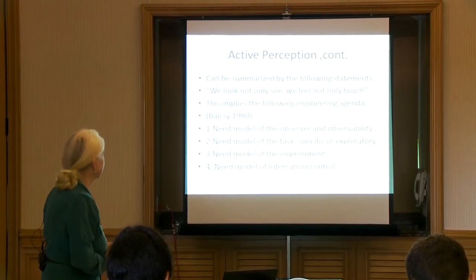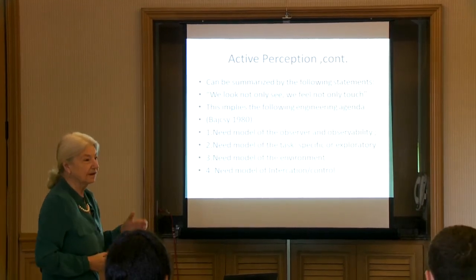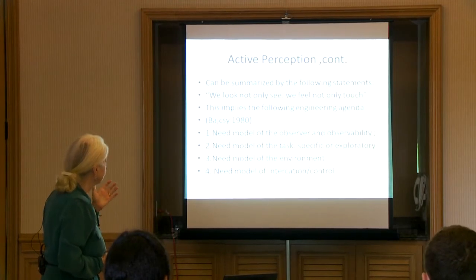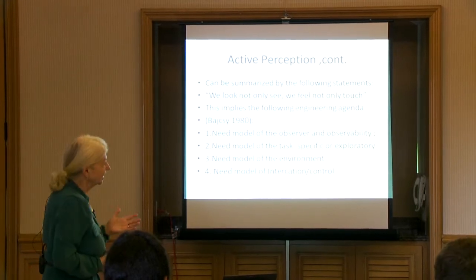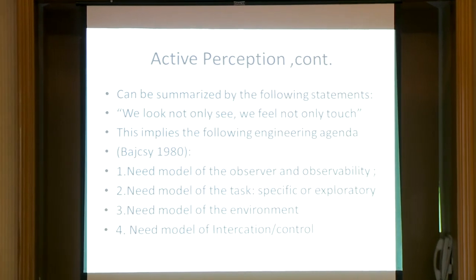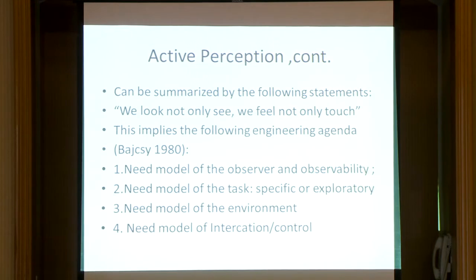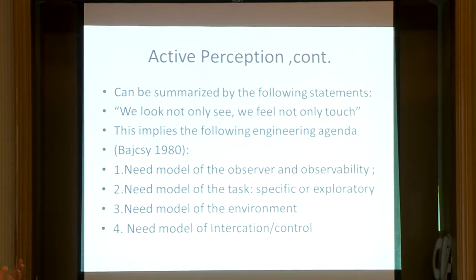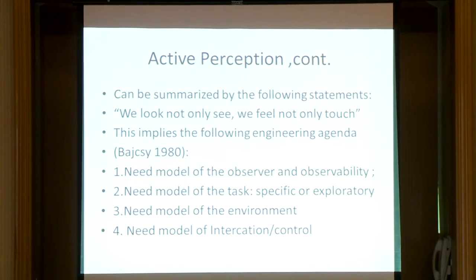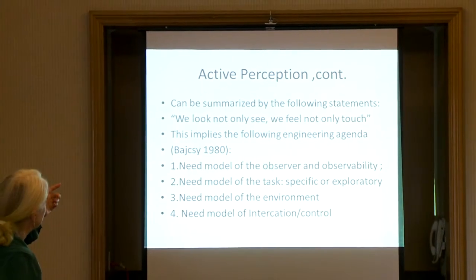We can summarize it the following way: we look, not only see — so this is already an active process — and we feel, not only touch. This implies the following engineering agenda, which I formulated around 1980, and started the GRASP Lab, which had in its name General Robotics Active Sensory Perception because of this. I came from Czechoslovakia with a control systems background — strictly linear systems in those days — and when I came to Stanford, I got indoctrinated with logic and discrete representation. So, what is active perception as an engineering agenda?